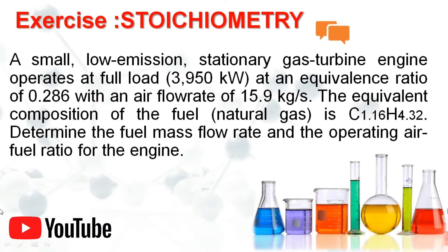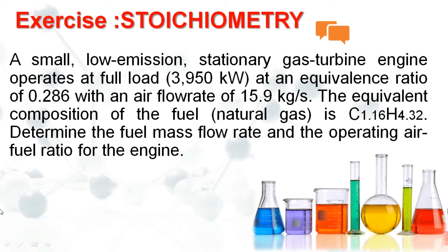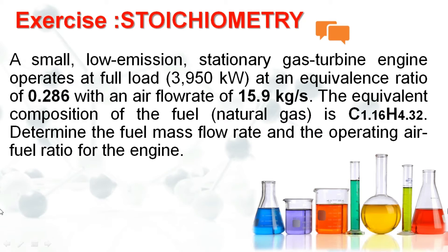Now we will solve a problem. A small low-emission stationary gas turbine engine operates at full load of 3950 kW at an equivalence ratio of 0.286, with an air flow rate of 15.9 kg/s. The fuel composition (natural gas) is C₁.₁₆H₄.₃₂. Determine the fuel mass flow rate and operating air-fuel ratio.